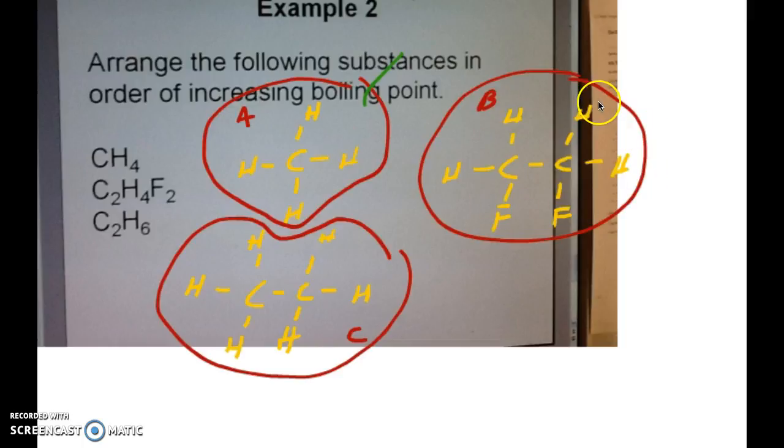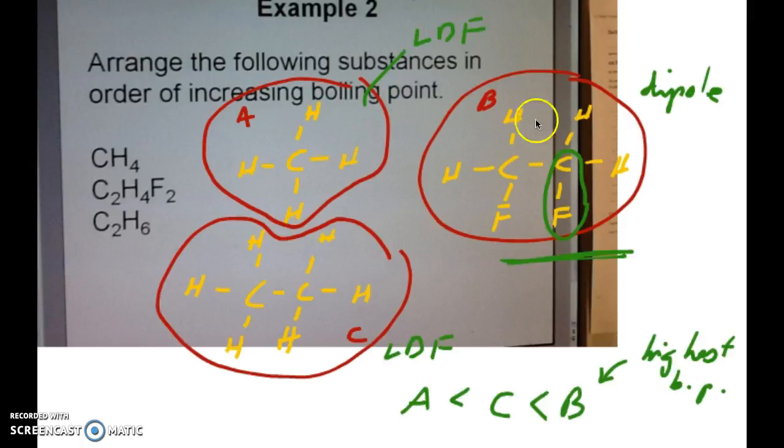So if I have to rank this in terms of strength of intermolecular forces, this will be the strongest one. And then between these two, I'm going to pick this one as the second one because that one is a larger molecule. Remember that when you're larger, your intermolecular forces are also stronger because you have more of them per molecule. So this one would then be the weakest one of them all. So in terms of increasing boiling point, B would have the highest boiling point, C would be in the middle, and this one would have the lowest boiling point. So A is less than C, less than B, which is exactly what I have here in the answer.